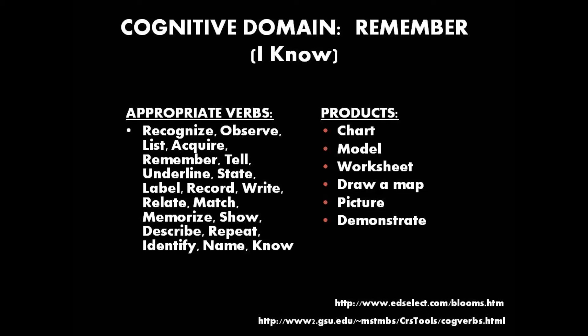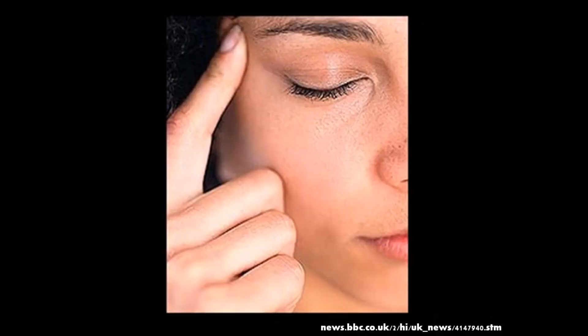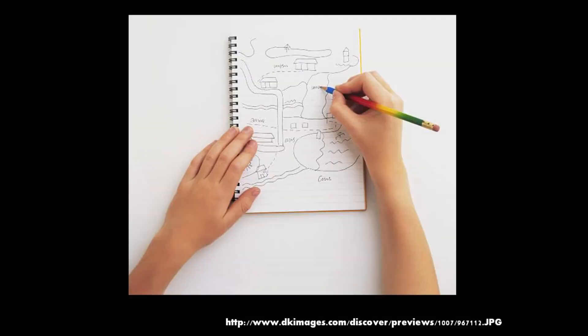The first subgroup, termed remember, or 'I know,' is a starting point that encapsulates the acquiring of knowledge and the ability to recall information when needed. When stating an objective for this subgroup, appropriate verbs would be recognise, underline, and memorise. Some of the products you could ask your students to make are graphs, maps, or pictures.